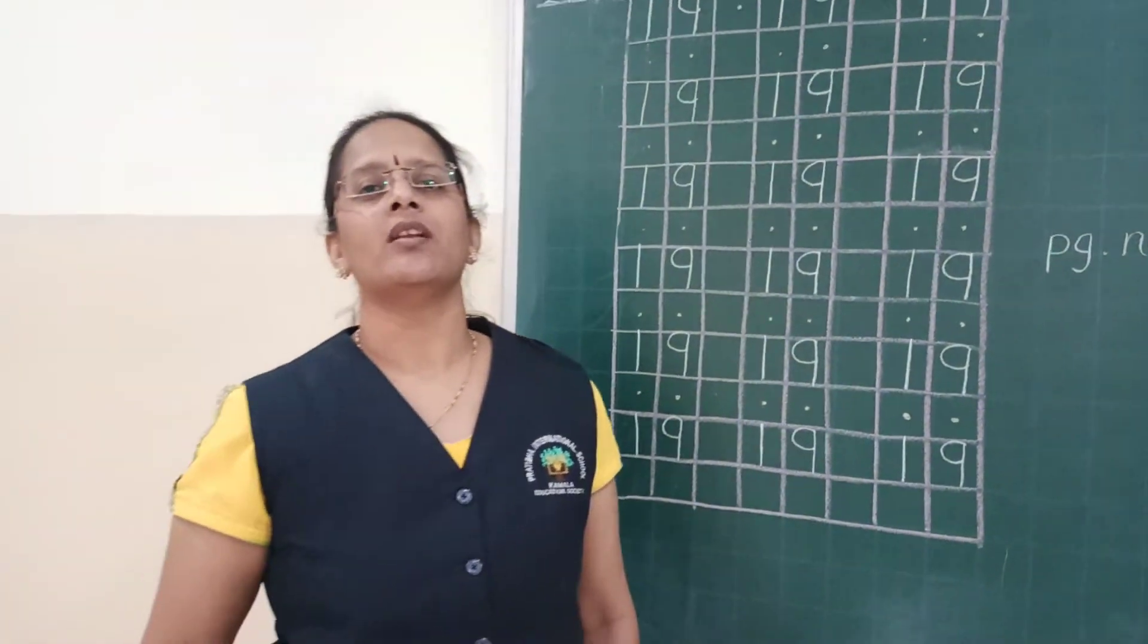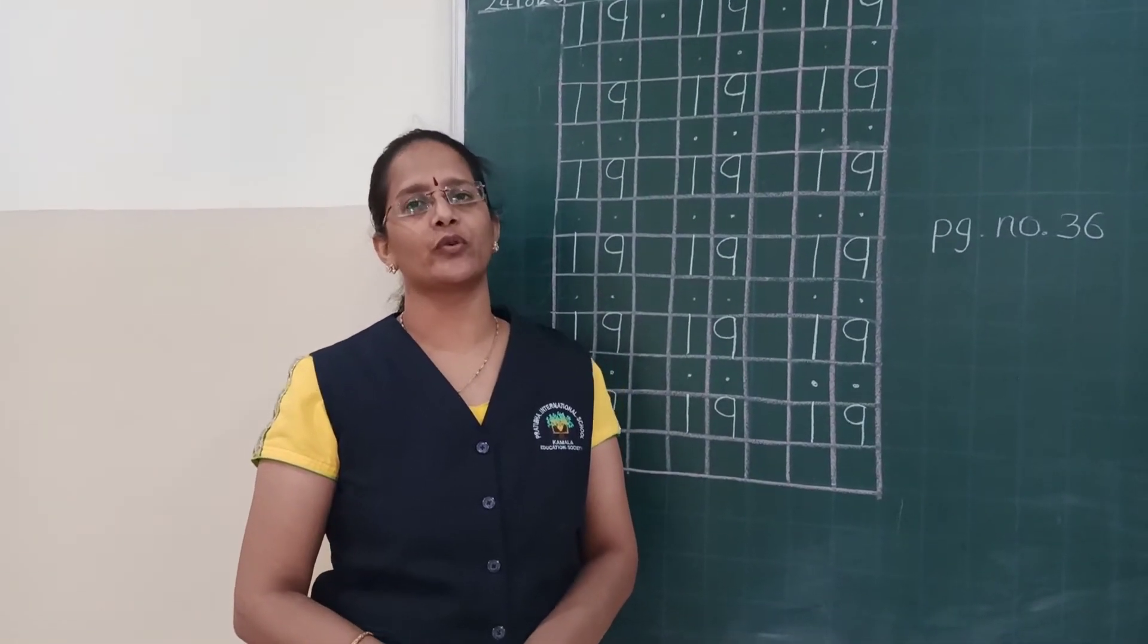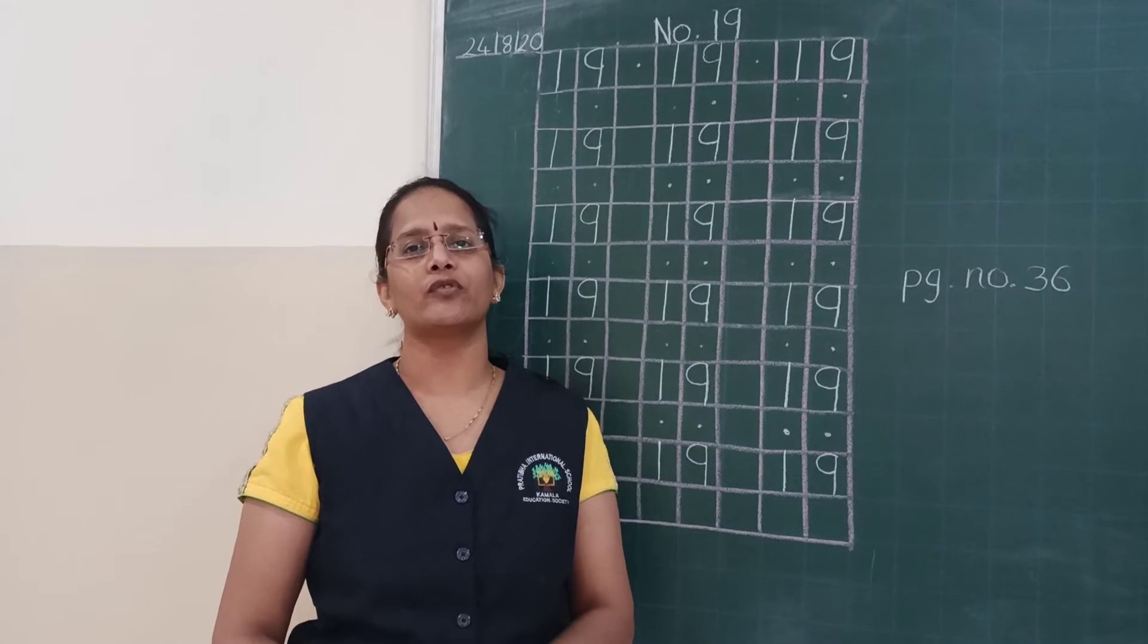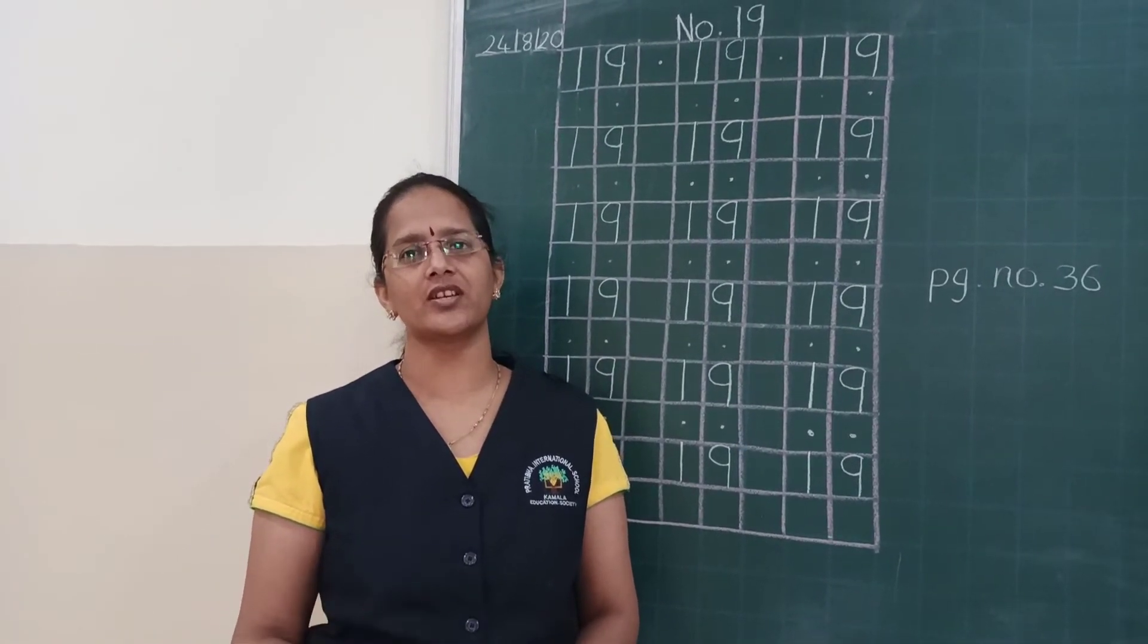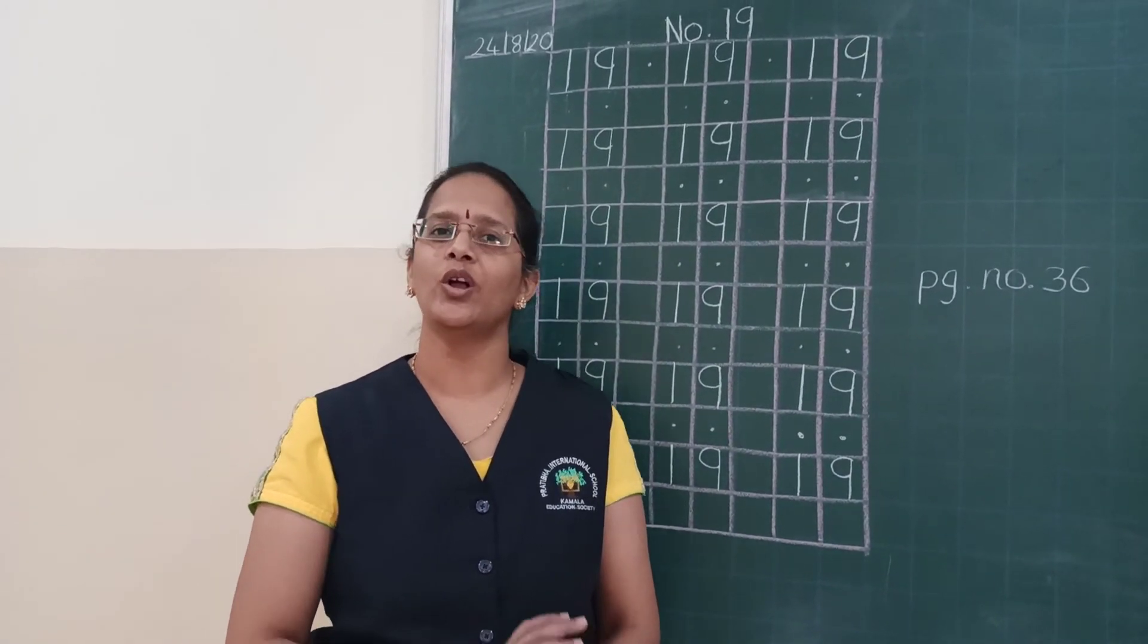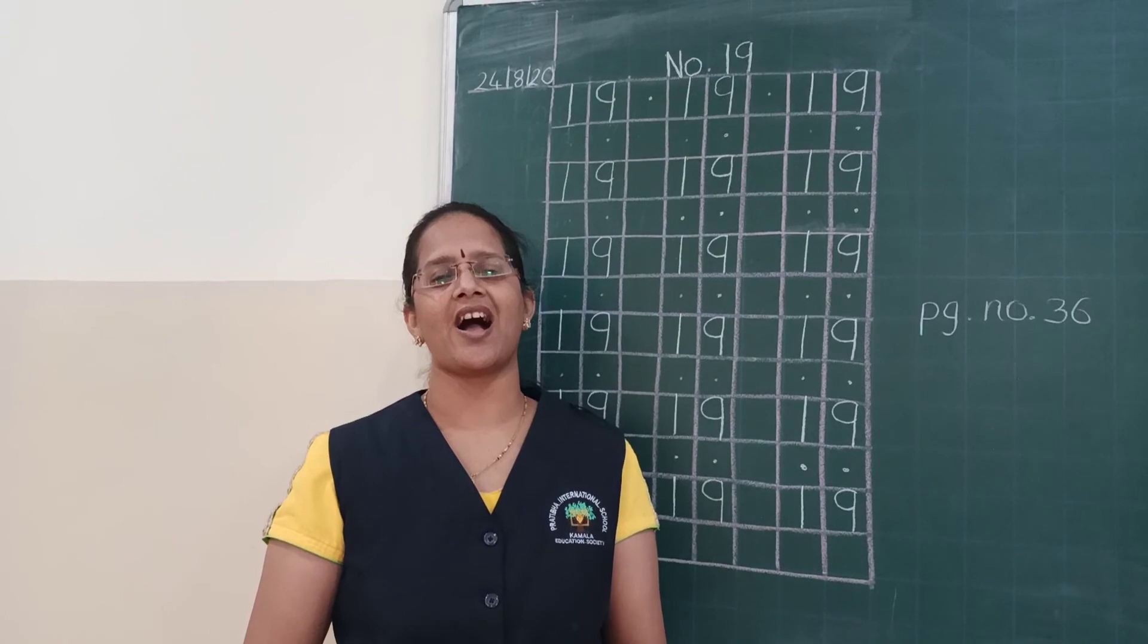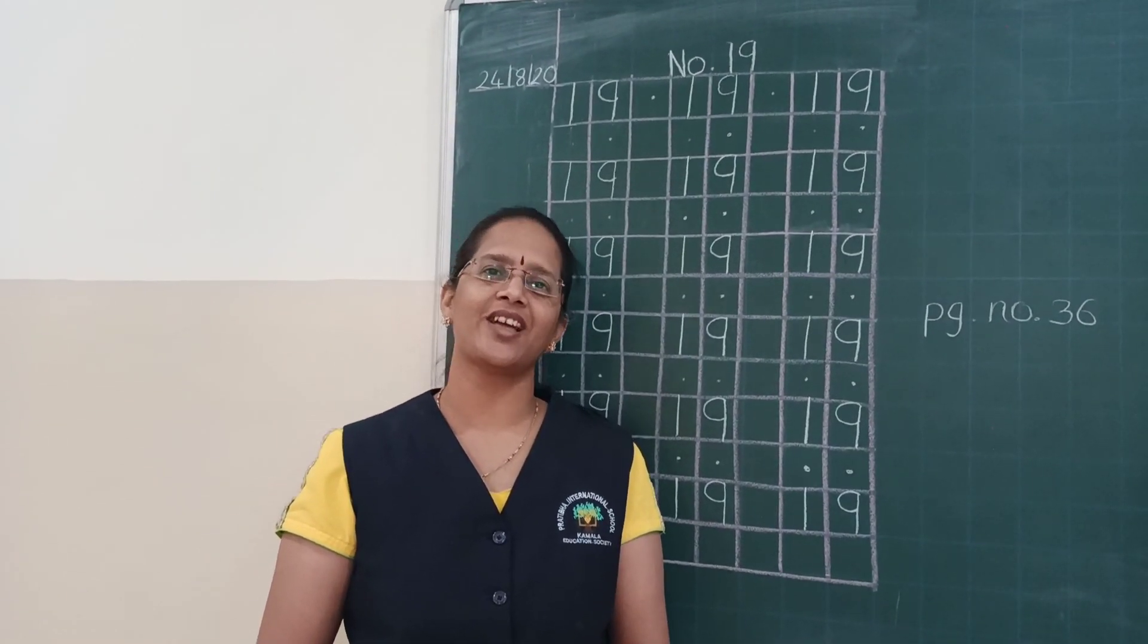Like this in your numbers 1 to 100 book, you have to write number 19 which is on page number 36. And you have to count your durvas or flowers or anything which object is available at your home. You have to count up to 19. And please upload your homework in the Google Drive and give comment in the comment box. Thank you.